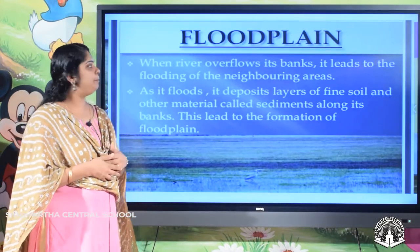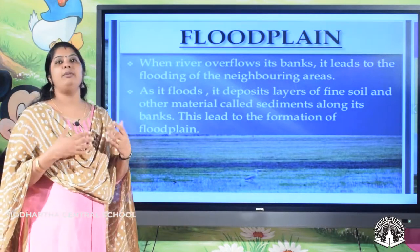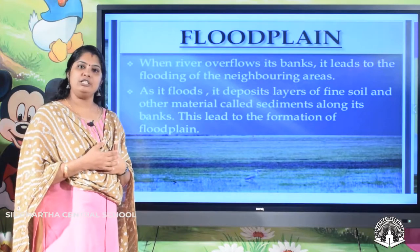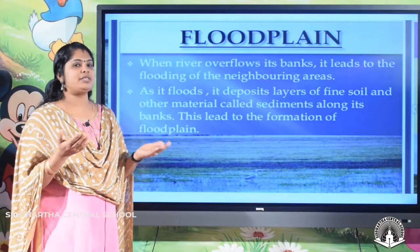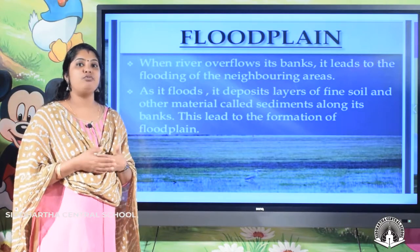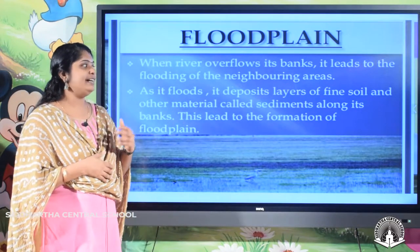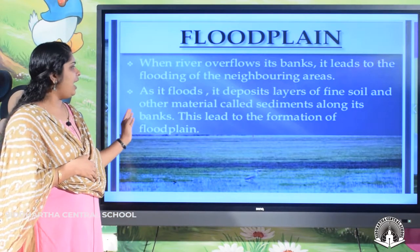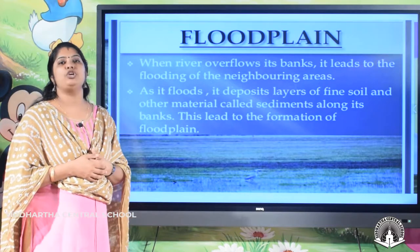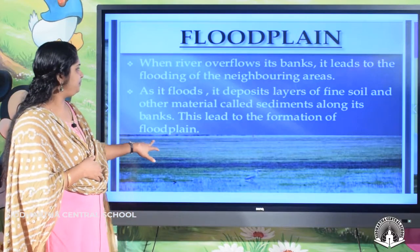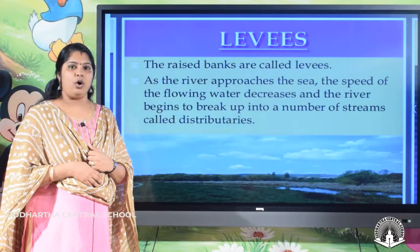Next is flood plains. When the river overflows its banks, it leads to the flooding of neighboring areas. As the river floods, it deposits layers of fine soil and other material called sediments along its banks. These lead to the formation of flood plains. The next landform is levees — the raised banks of rivers are called levees.